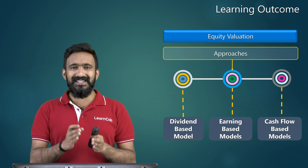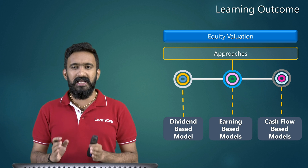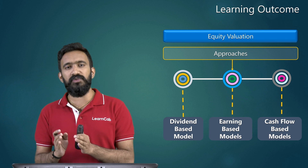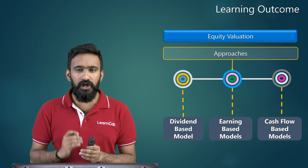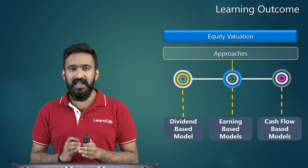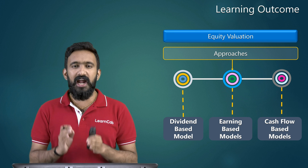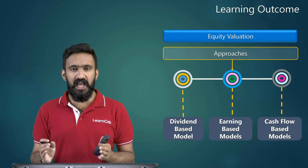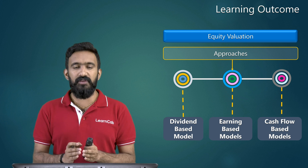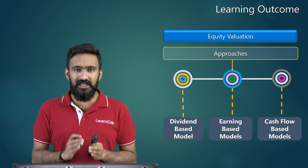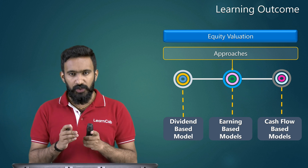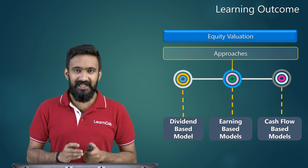What is different in all these three models is just the cash flow or the inflow that we take. In one case we take dividend, in another case we take earnings, and in the third approach we take cash flow. Each approach has its advantages and limitations. Based on multiple scenarios we will use all these approaches. It is very important that we understand what models are available in each of these approaches towards equity valuation.